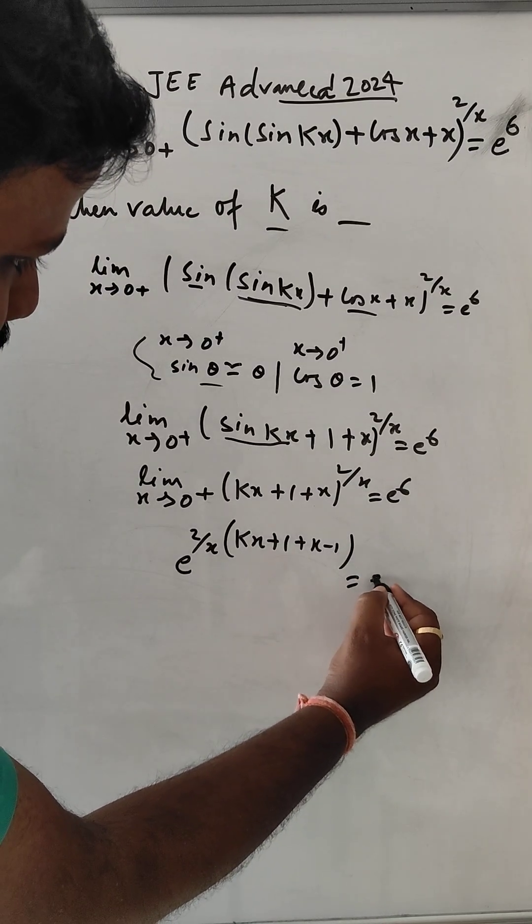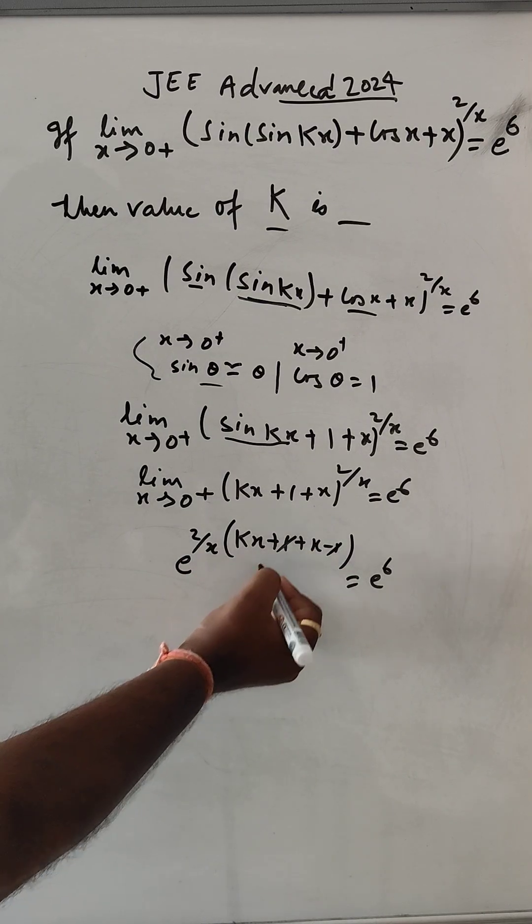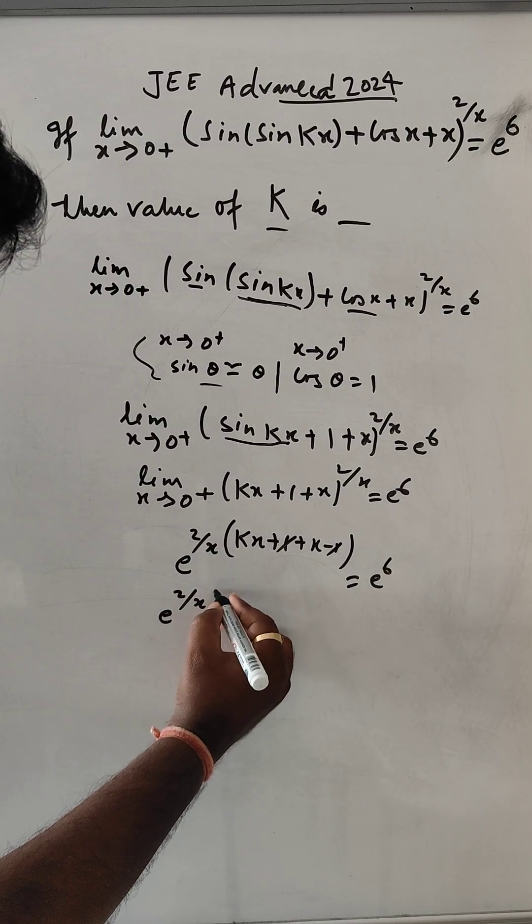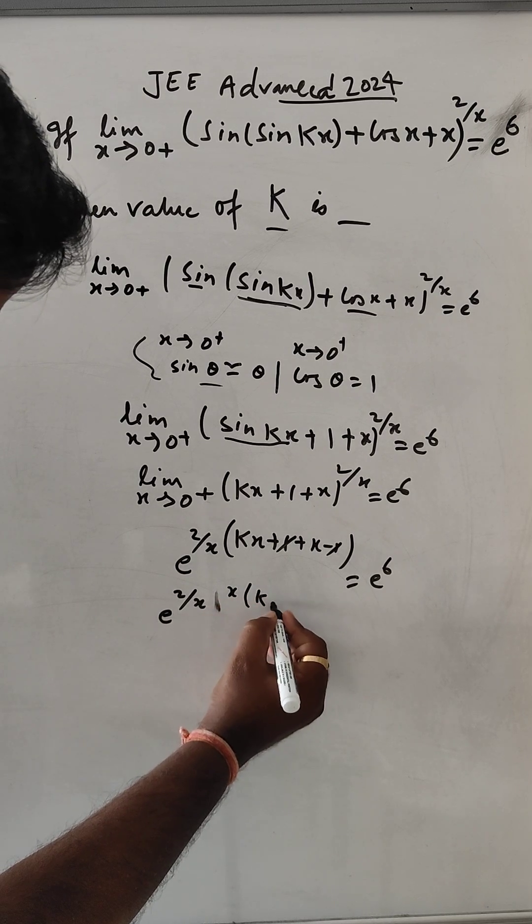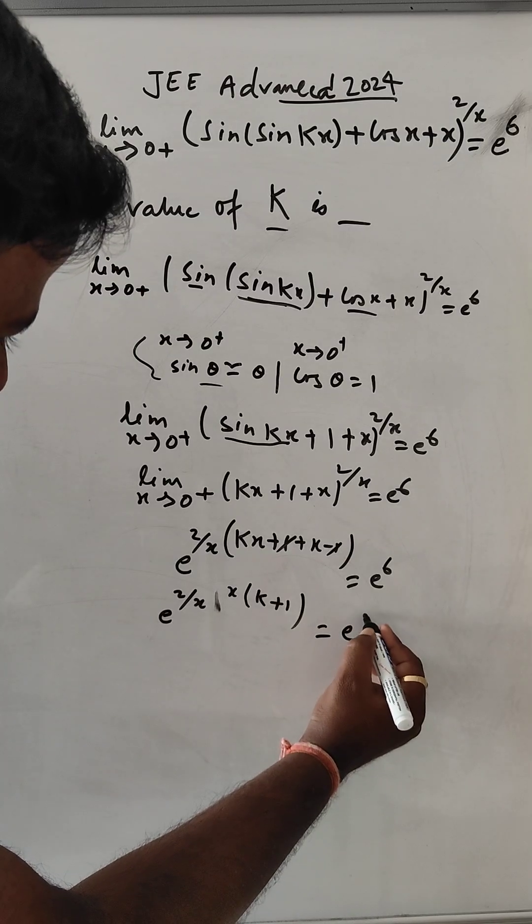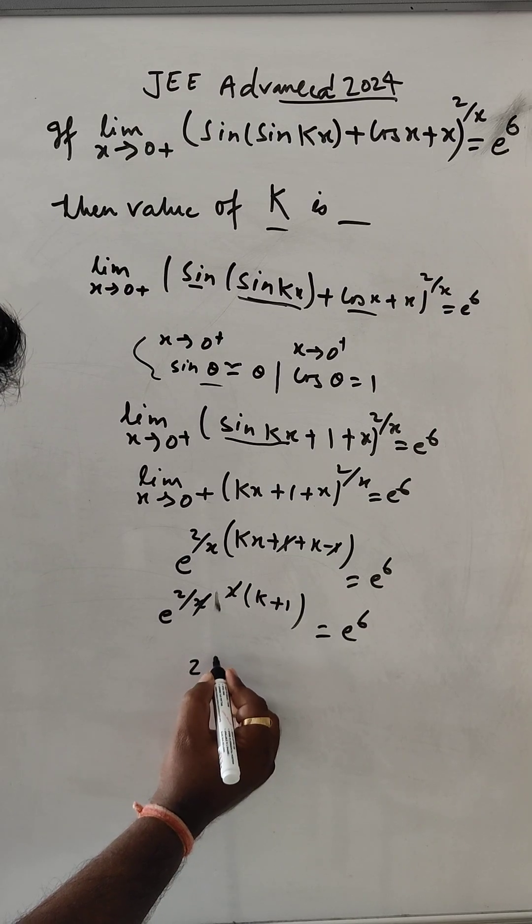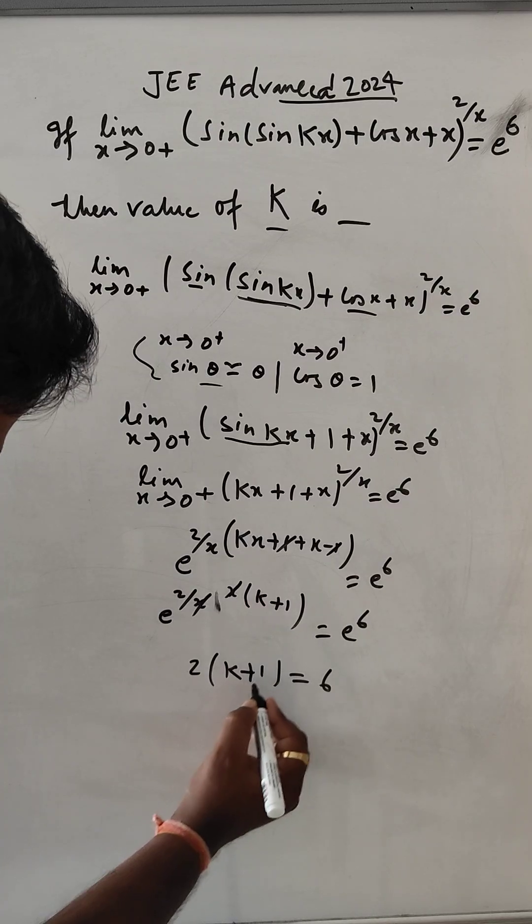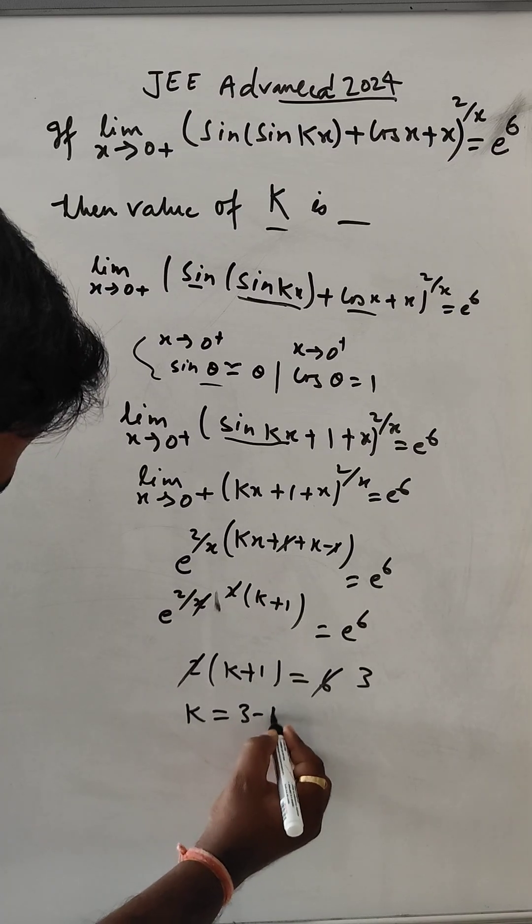This equals e^6. Now the 1 and 1 cancel. From e to the power x, we can take x common: (k + 1)x. This equals e^6, so x cancels. Then 2(k + 1) equals 6.